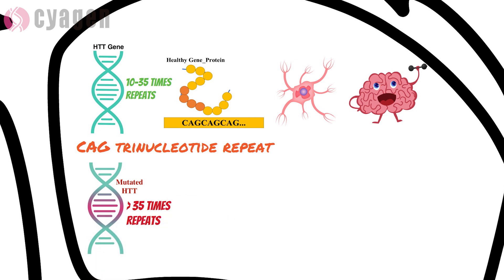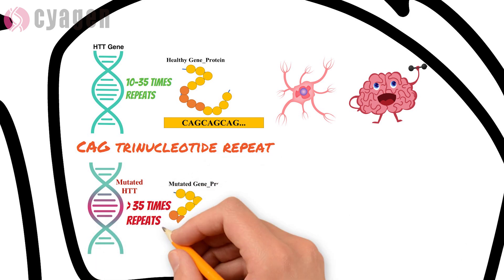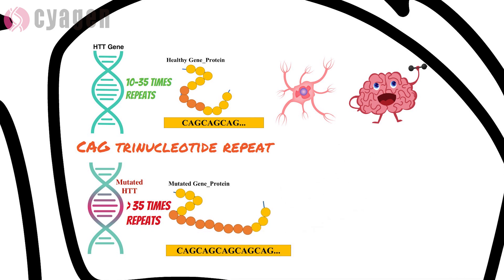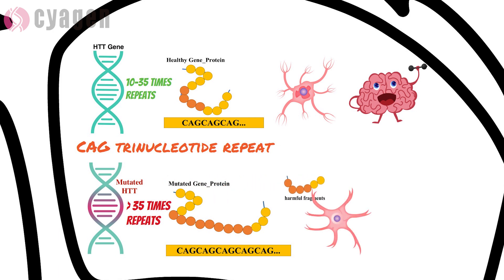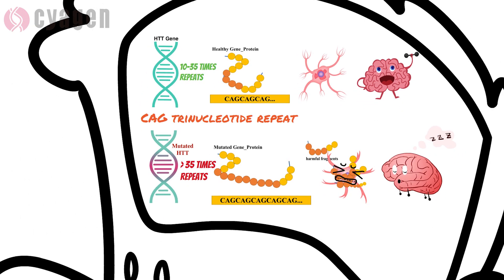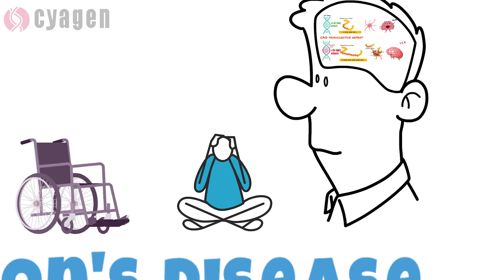When the CAG segment expands, it triggers the synthesis of an unusually long variant of the Huntington protein. The elongated protein disintegrates into harmful fragments that aggregate and accumulate in neurons, disturbing these cells' typical operations. This dysfunction and eventual demise of neurons in particular regions of the brain are responsible for the manifestations and symptoms of Huntington's disease.